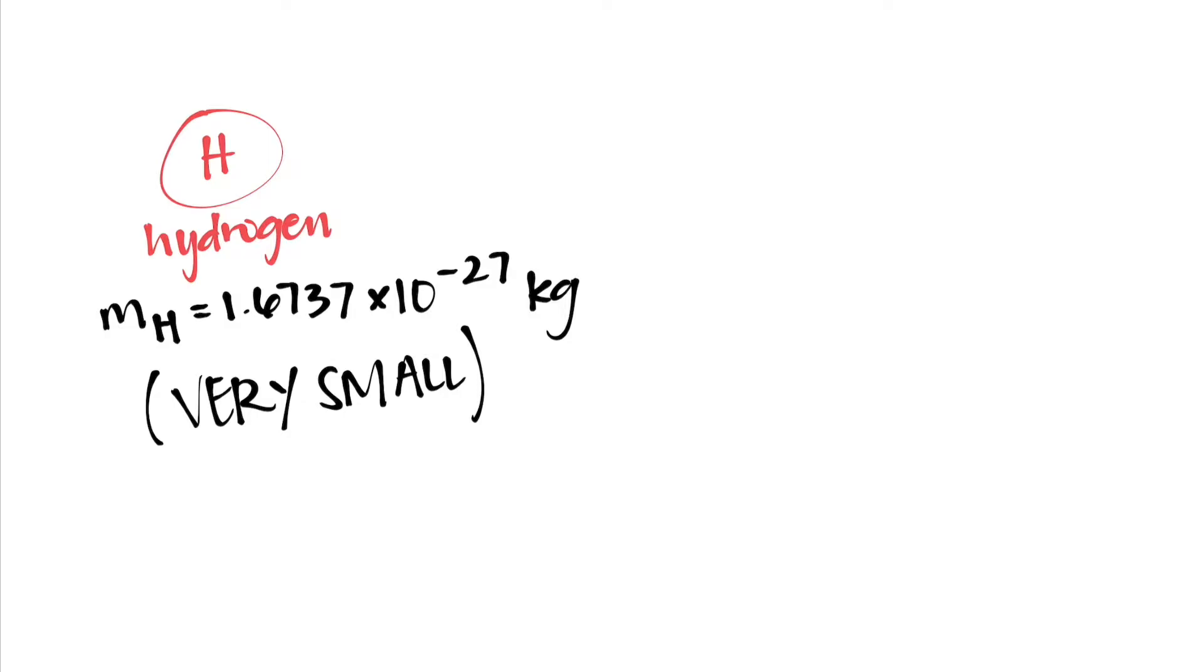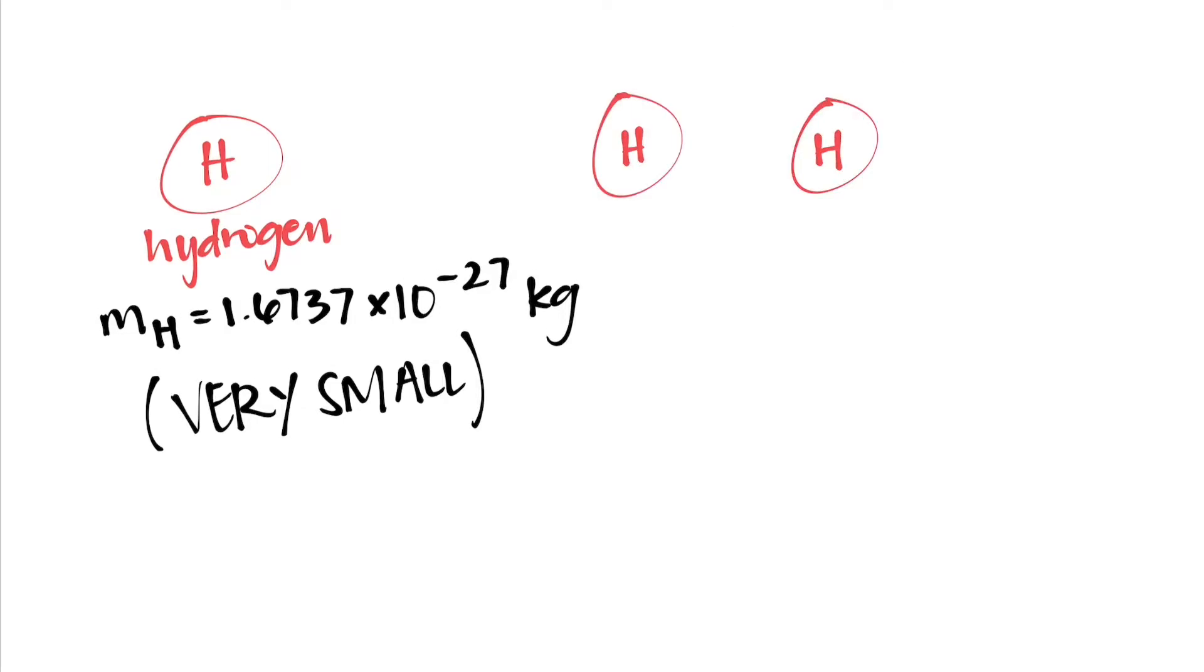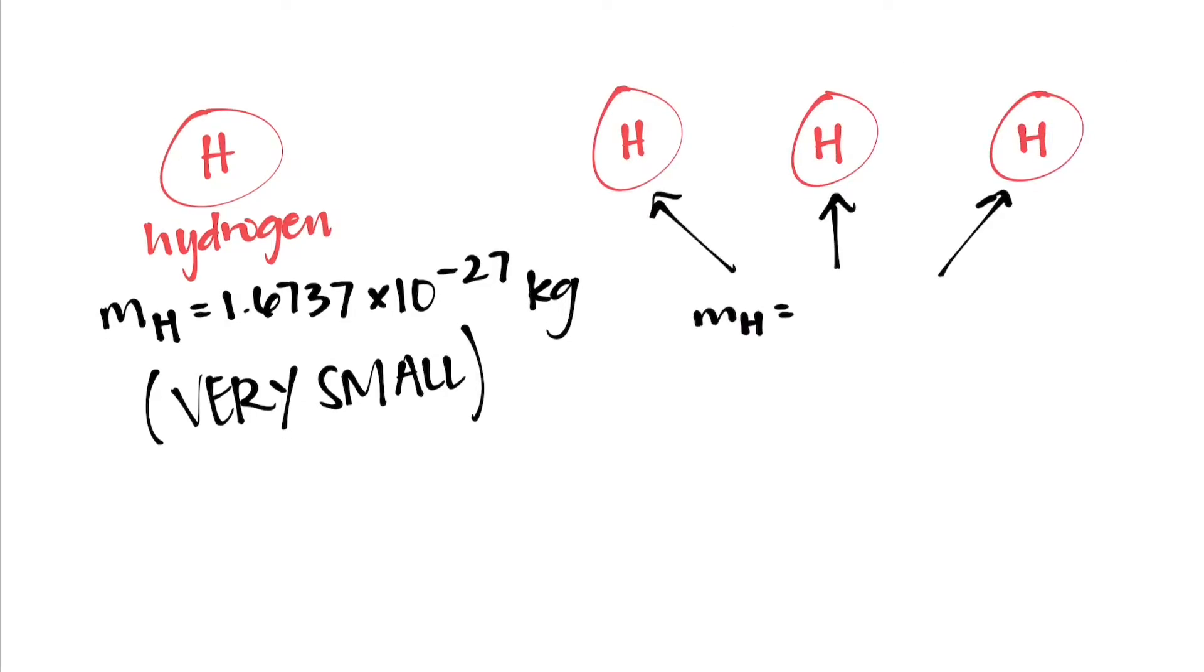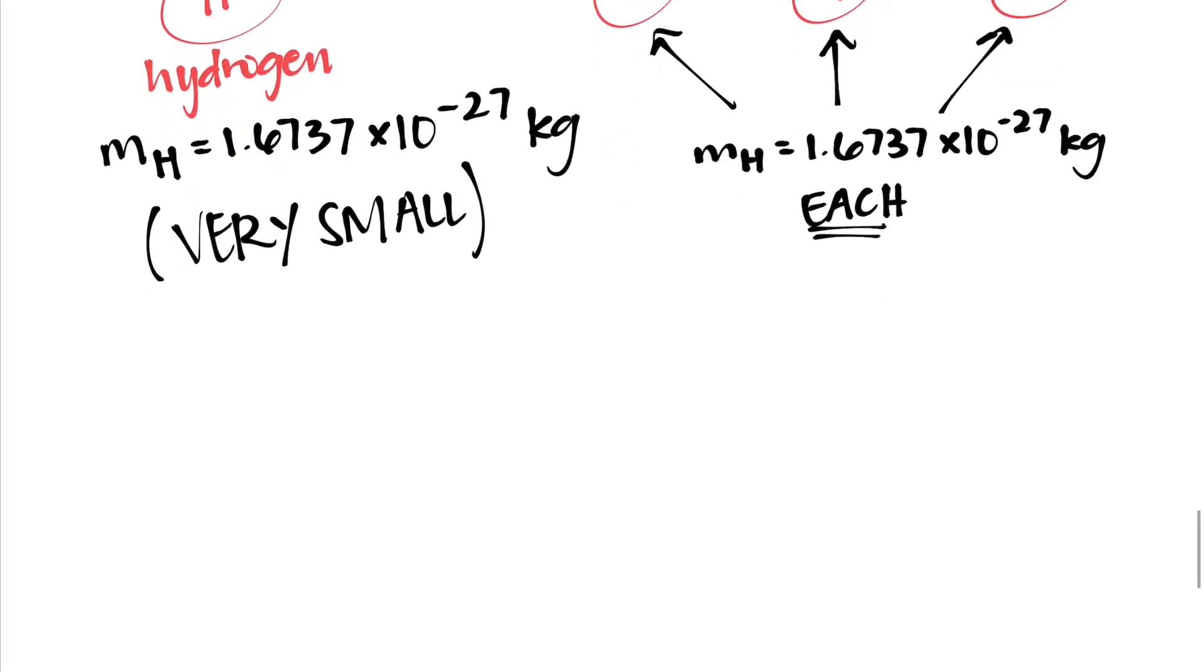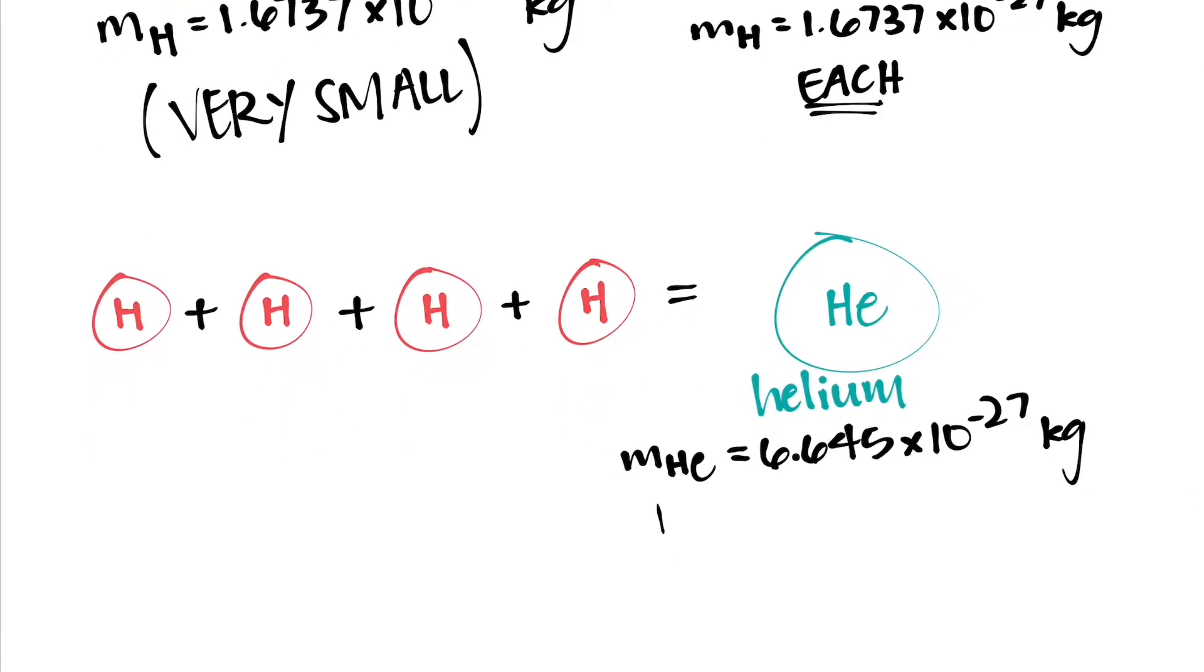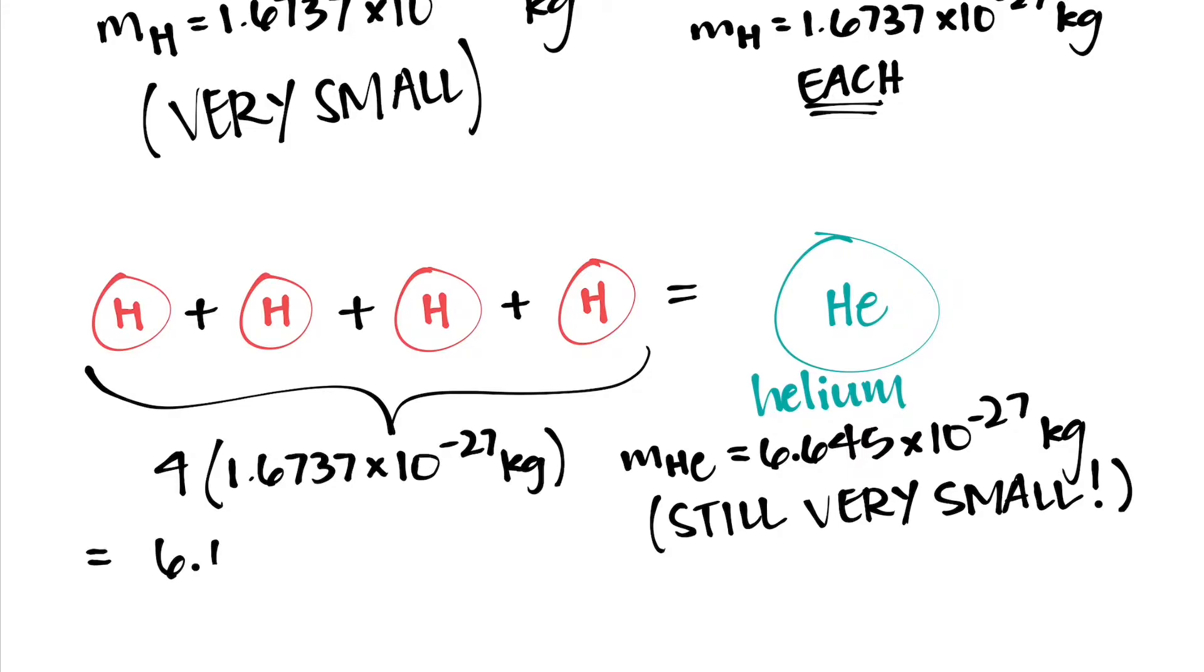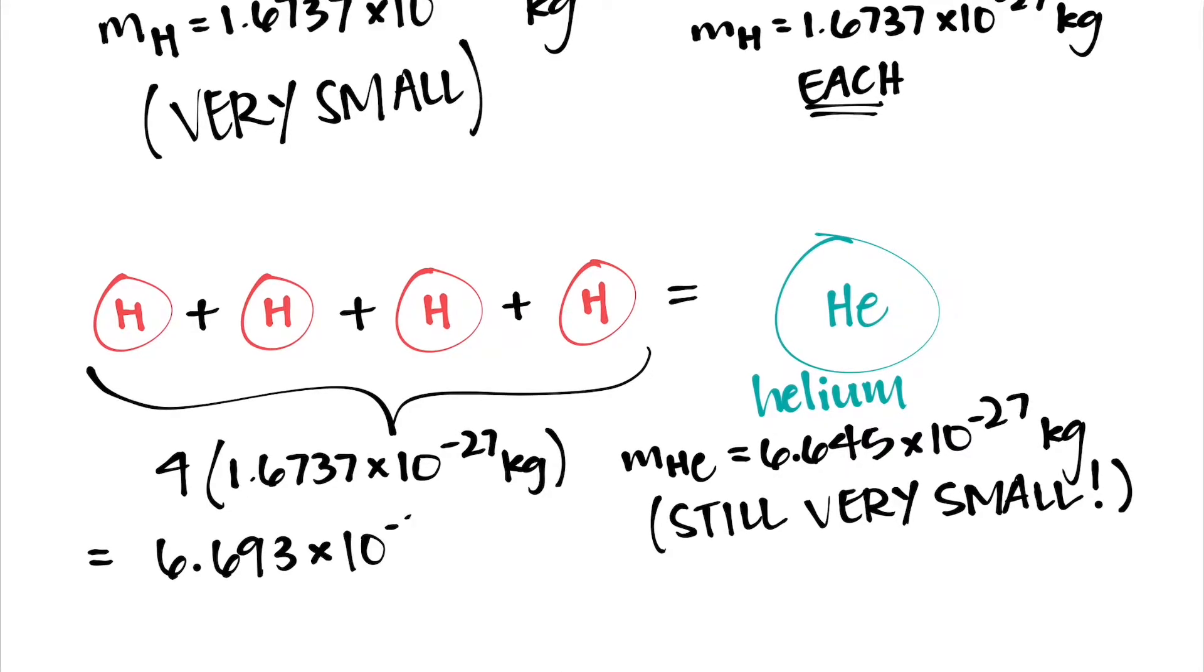So four of these really tiny atoms are necessary to create one helium atom. One helium atom is also really tiny. Sure, it's got a mass that's slightly bigger than a single hydrogen atom. I mean, four of them did come together to create this one helium atom. But there's still a little bit of mass lost in the process that needs to be accounted for.